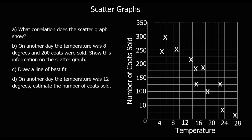Here's a question. What type of correlation does this scatter graph show? It's going down — it's a negative correlation. And if I wanted to describe the relationship: as the temperature increases, the number of coats sold decreases.